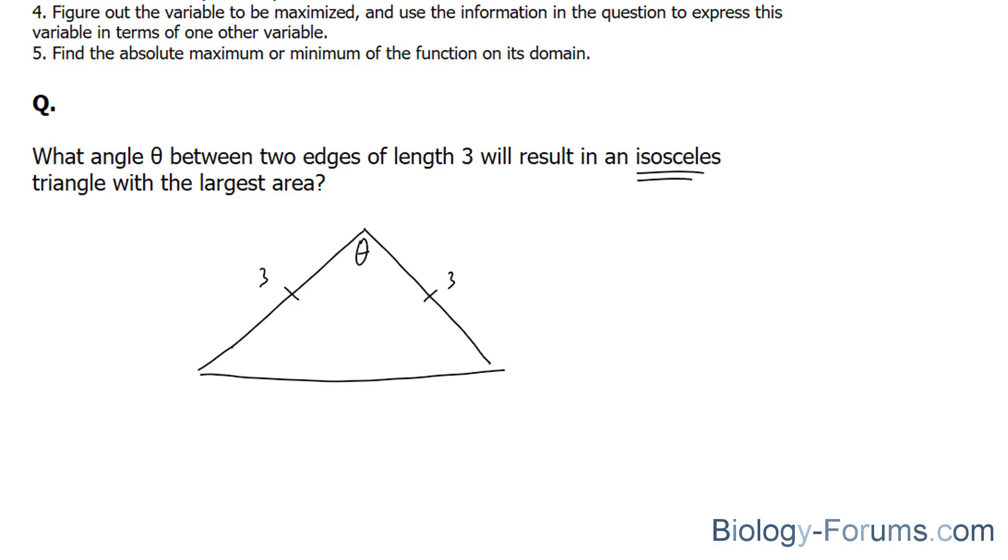We'll start off by writing out the formula for the area of a triangle. Area of a triangle is equal to base times height times half, or base times height over two.